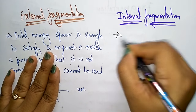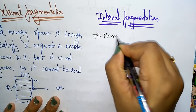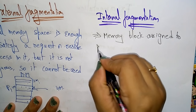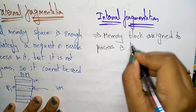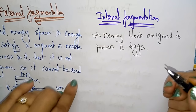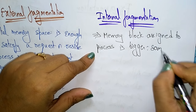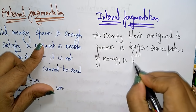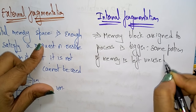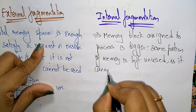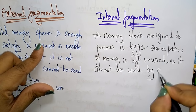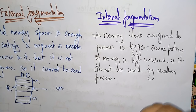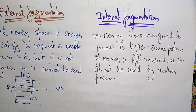Whenever memory is not contiguous and remains unused, you call it external fragmentation. Now coming to internal fragmentation: in internal fragmentation, the memory block assigned to a process is bigger, and some portion of memory is left unused because it cannot be used by another process.